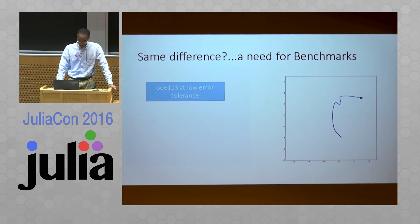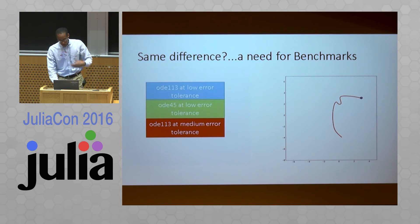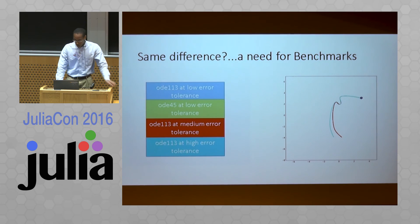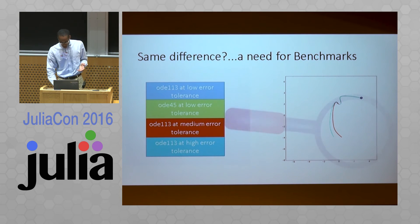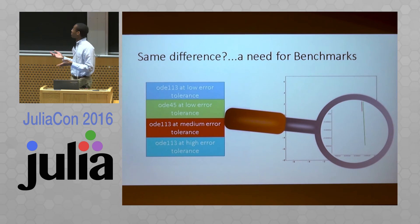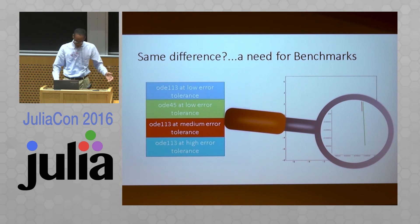Now let's just look at the blue star. We're going to try a lower error, a lower error with a different solver, the medium error from before, and a higher error. Obviously with the higher error there's some difference, but how about the other ones — is there a difference at all? Well, we can see there is a difference. But how is the user going to tell? If I want to know, what am I going to do? We're going to need a way to benchmark these solvers.